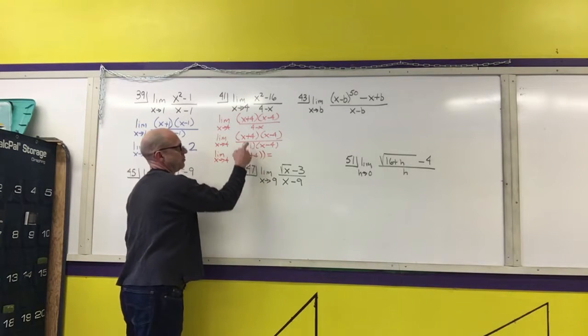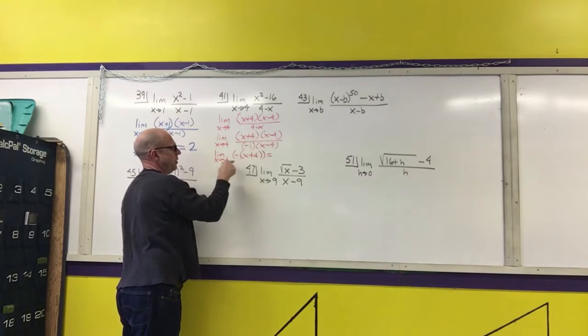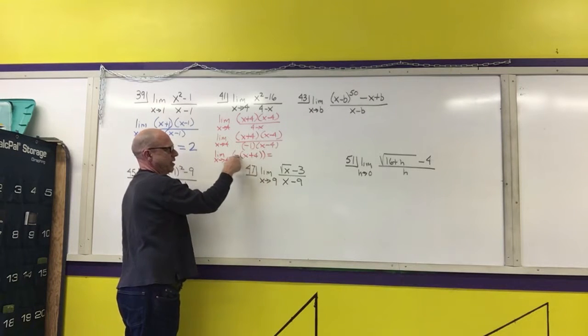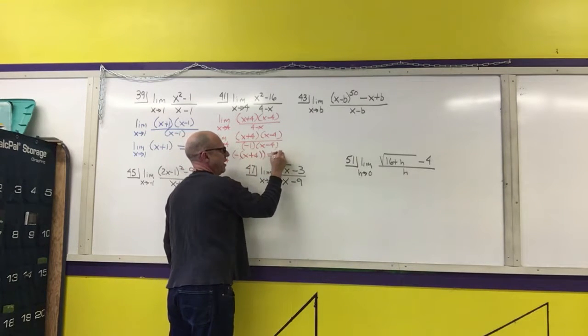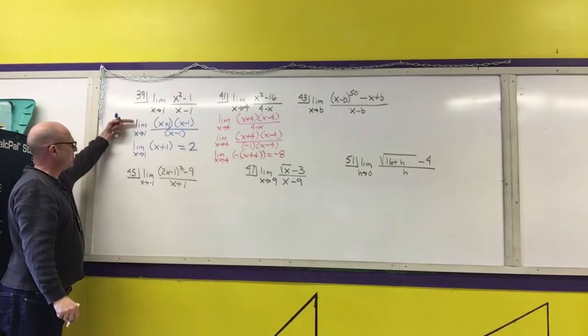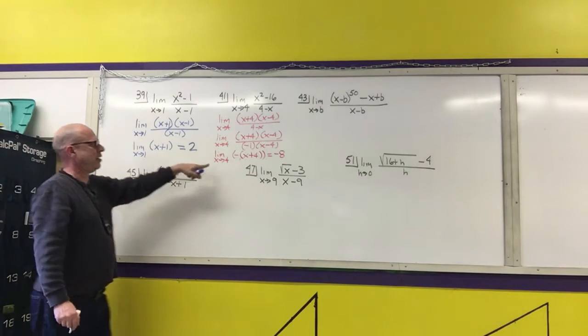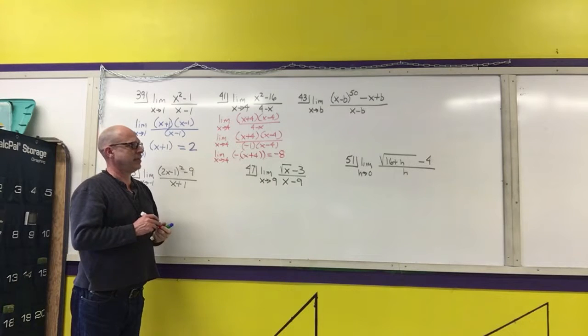Actually, that should be a plus 4. Sorry, these cancelled. That one didn't. 4 plus 4 is 8 times a negative would be negative 8. Notice on both of these problems, I keep copying the limit until the point that I actually take the limit.